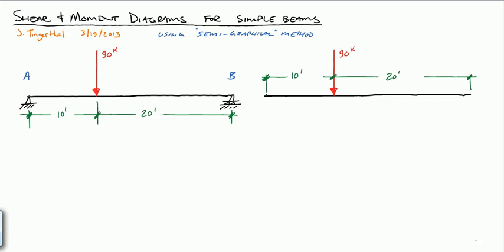On the right, I've redrawn the beam, the load, and the geometry. Because we have a roller on the right, we get a vertical reaction — we'll call that Rb in the y direction. On the left, we get a vertical reaction Ra in the y direction, and a horizontal reaction Ra in the x direction. We need to solve for these three unknowns before we can do the shear and moment diagrams.